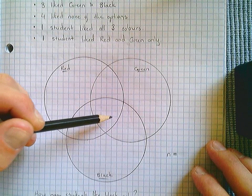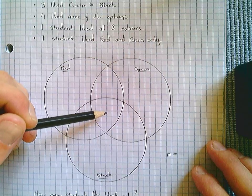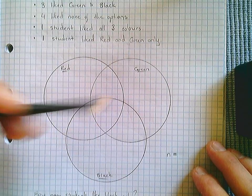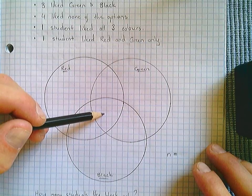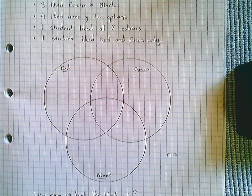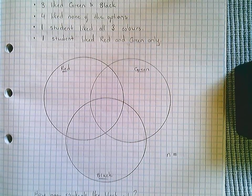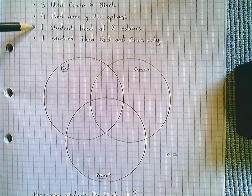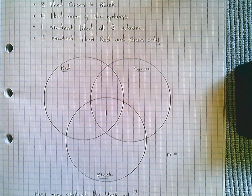Start with the most critical piece of information, which is this central piece, and work your way out of the Venn diagram. Start here if you have it. One student liked all three colours, this dot point here suggests that this is 1.